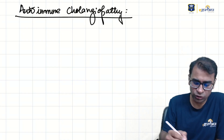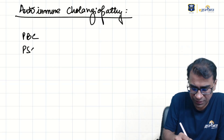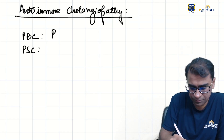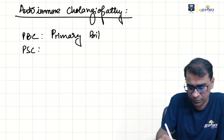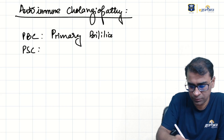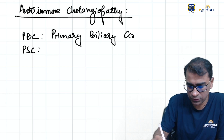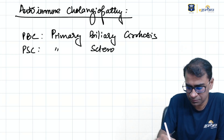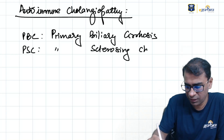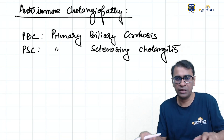Autoimmune cholangiopathies — the two of them: PBC (primary biliary cholangitis) and PSC (primary sclerosing cholangitis). Let's first understand what we mean by this.